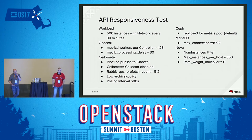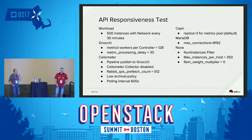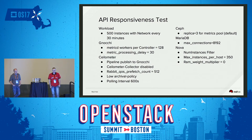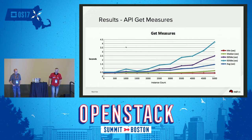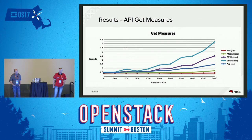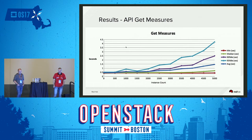Let me go into the API responsiveness test. For this one, I was doing instances with network, doing 500 instances every 30 minutes, and after the 30 minutes I would run my API responsiveness benchmarks. Here's the performance I found with get-measures as I bumped the instance count up — I only went to 5,000 on this test. The max is not graphed because it would throw off the axes. You can see the 95th percentile performed fairly well — 95% of all requests fell underneath that rate.